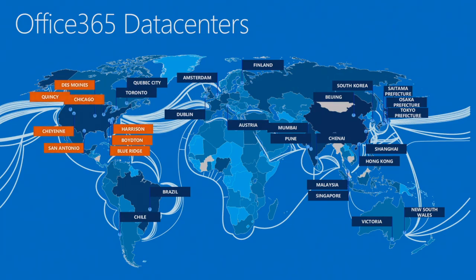If you spin up a tenant in the US region, it's going to be in one of these locations. One key thing to point out — you can't think of your data in Office 365 as being in one location. I quite often get customers in Europe say to me, 'my tenant's in Dublin.' It may well be at that point in time, but in a split second it could be active in Amsterdam. What you want to concentrate on is quickly connecting to Microsoft's data centers.